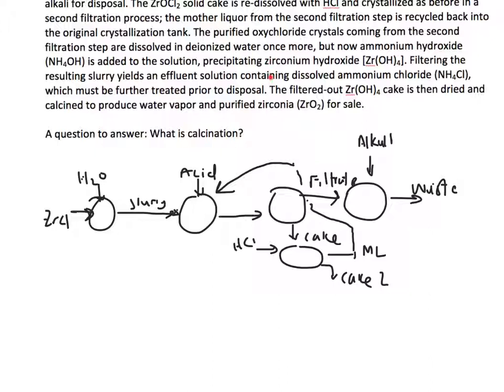The purified crystals from the second filtration step are dissolved in deionized water once more but with ammonium hydroxide NH4OH, and that leads to some sort of precipitate. That precipitate has to be filtered.